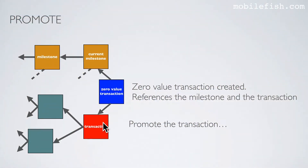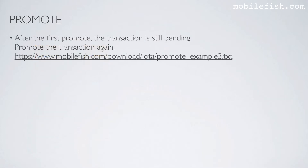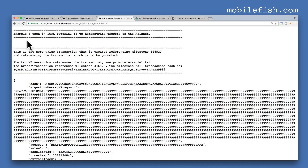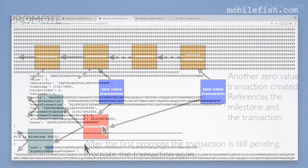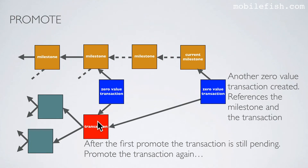When we promote this pending transaction, a zero value transaction is created referencing the current milestone and our transaction. After the first promote the transaction is still pending. Let's promote the transaction again — this is example 3. Another zero value transaction is created but now it references another milestone. It references our transaction with tail transaction hash IKS and this other milestone with transaction hash SQJ. After the first promote the transaction is still pending; after the second promote another zero value transaction is created referencing the current milestone and the transaction.